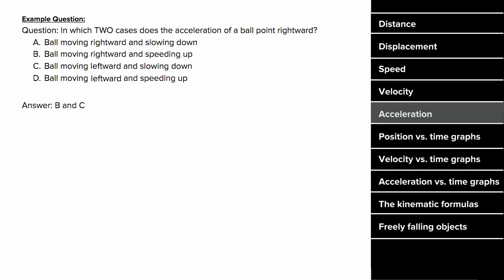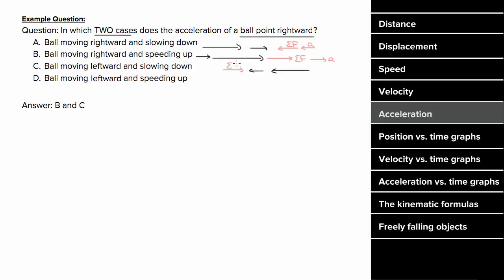What does an example problem for acceleration look like? Let's determine the two cases where acceleration points to the right. If a ball is moving to the right and slowing down, there's a net force to the left, so acceleration also points left. If a ball is moving to the right and speeding up, the net force and acceleration both point right. If a ball is moving leftward and slowing down, the net force and acceleration point right. If a ball is moving leftward and speeding up, the net force and acceleration both point left. So cases B and C are the two where acceleration points to the right.